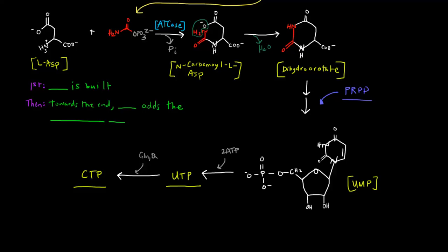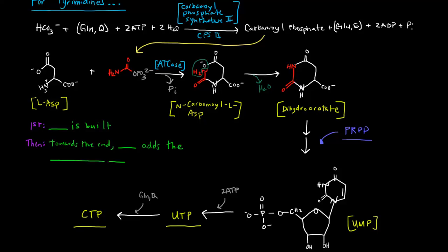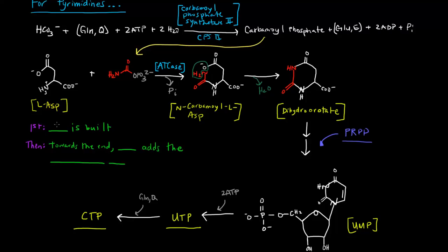How is this a little bit different than purine synthesis? In this case, the first thing that happens is that the ring is built. The ring of the pyrimidine is built. And then, towards the end, PRPP adds the phosphoribose unit. And then we have our pyrimidine nucleotides. I hope that general overview was pretty helpful.